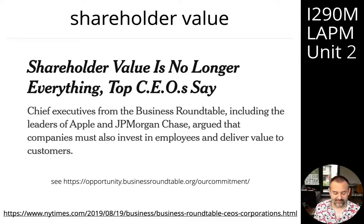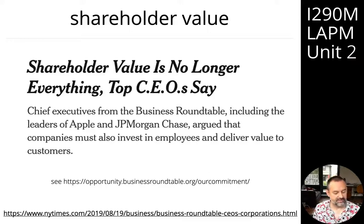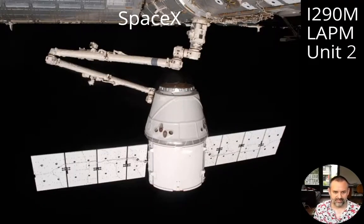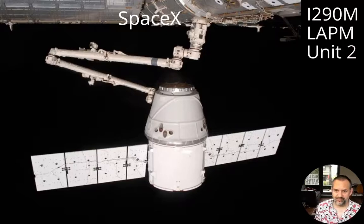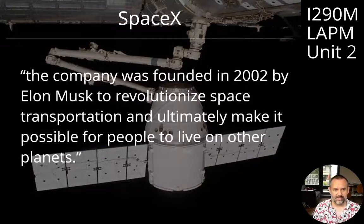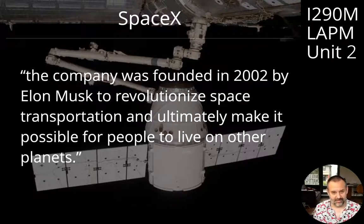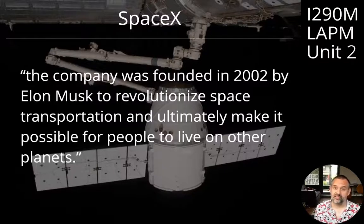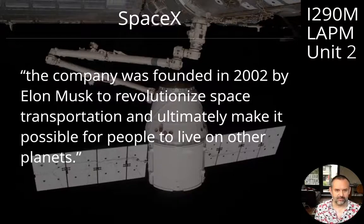There are major companies very clearly focused on mission, not on making money. SpaceX is an interesting organization — the first company to build a private spaceship that docked with the International Space Station, the Dragon module. Their mission, stated when the company was founded in 2002 by Elon Musk, is to revolutionize space transportation and ultimately make it possible for people to live on other planets. This goal is not focused on maximizing shareholder value, and that clear purpose has enabled SpaceX to become successful.